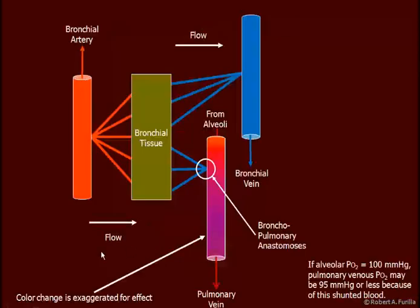One example of a normal shunt occurs in the bronchial circulation. In this example, I'm looking at bronchial artery feeding bronchial tissue, not the alveoli, feeding bronchial tissue that would be the smooth muscle, the epithelial cells lining the airways.